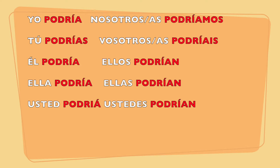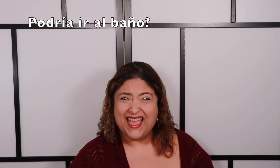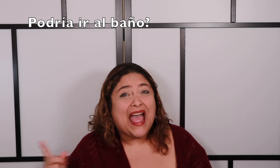Podría — I could. Podrías — you could. Él, ella, usted podría — he could, she could, or you could. Podríamos — we could. Podrían — they could, or you all could. We're going to use the same sentence structure with the same rules. So if you wanted to request permission: ¿Podría ir al baño? — Could I go to the bathroom? Or as a statement: Podría ir al baño — I could go to the bathroom.